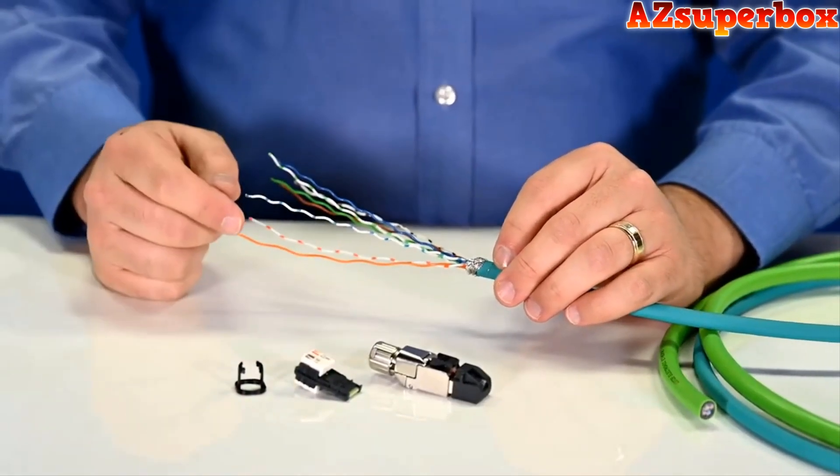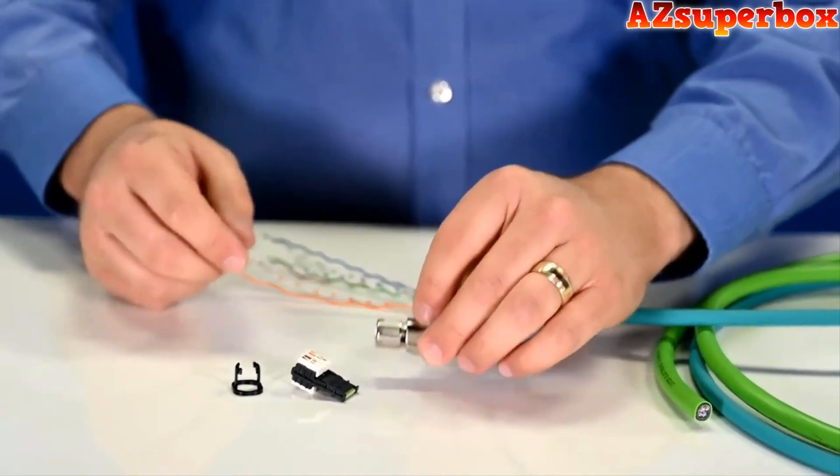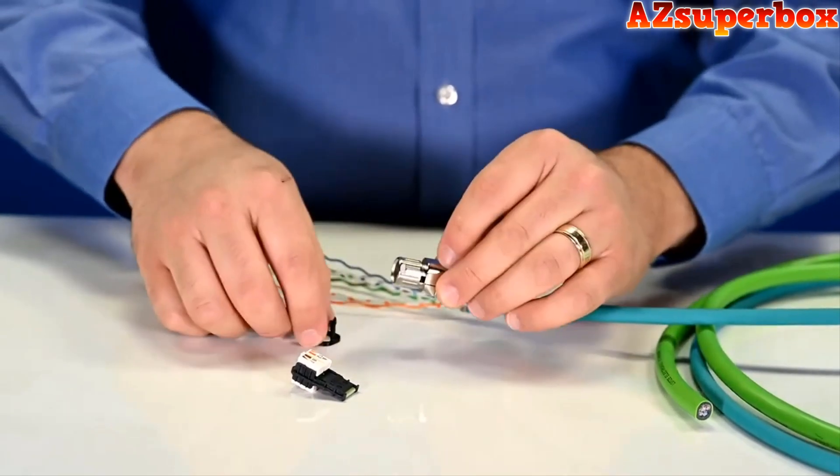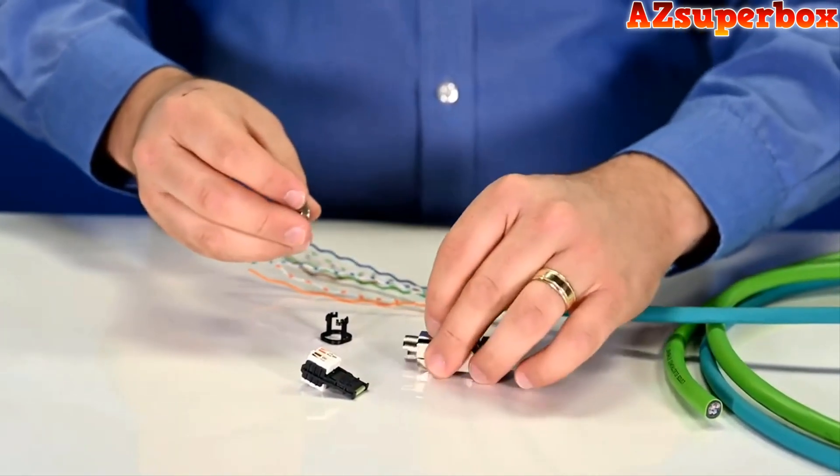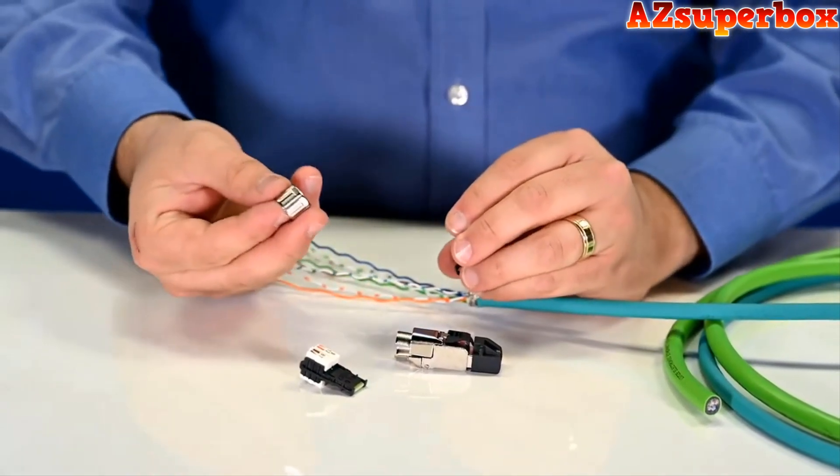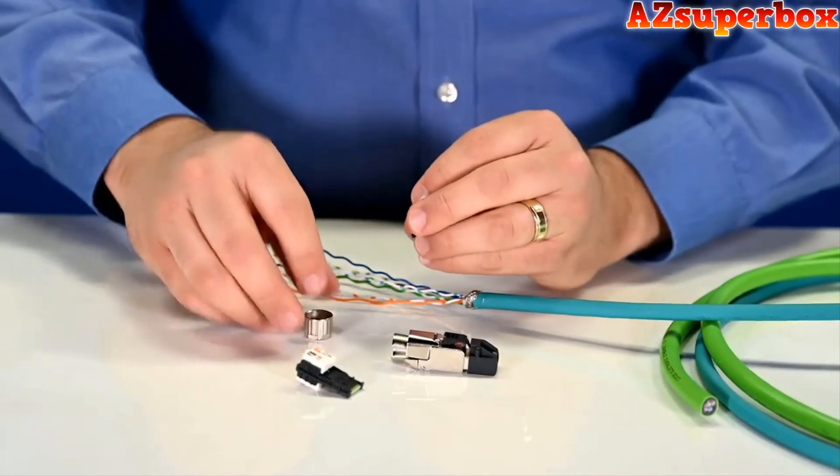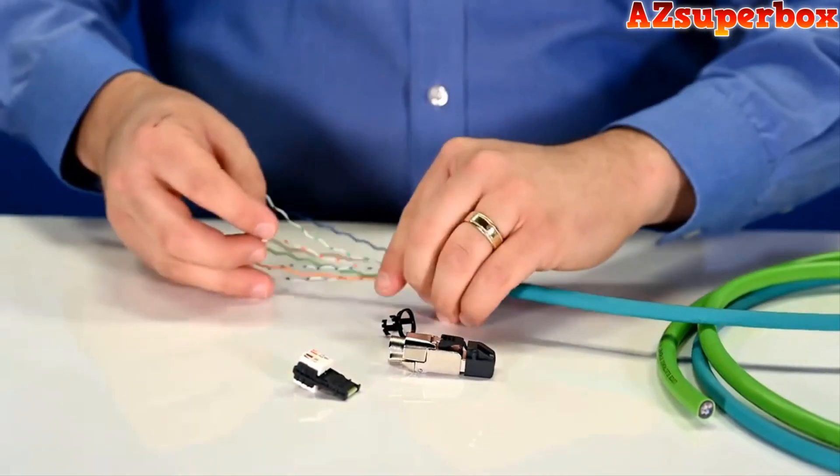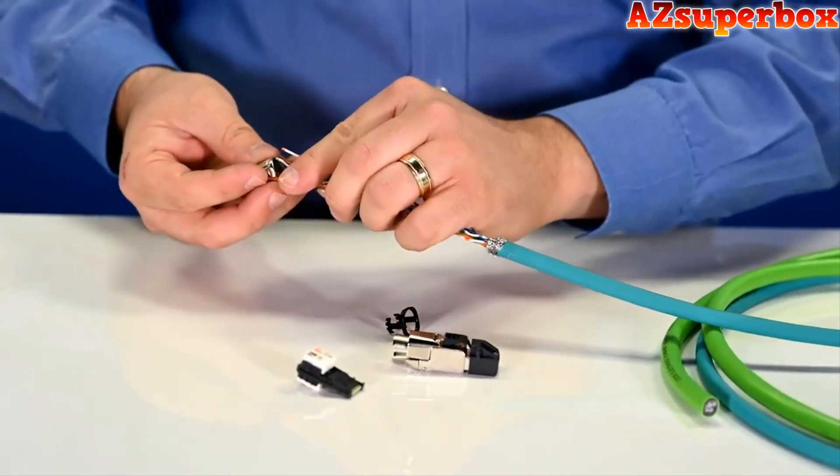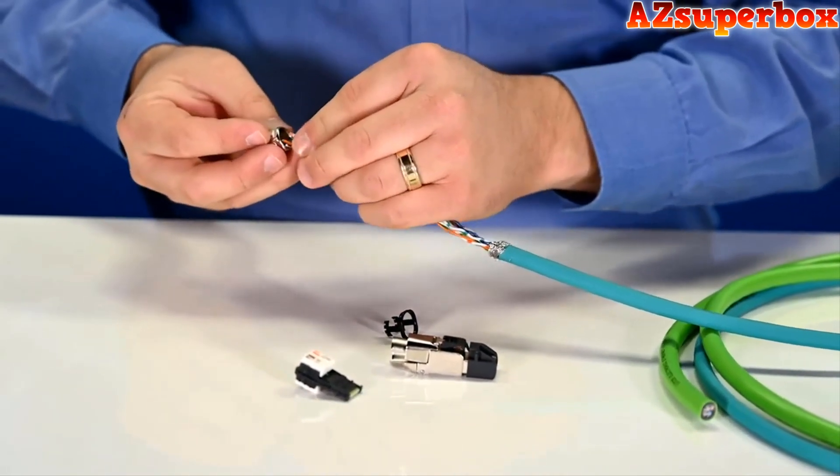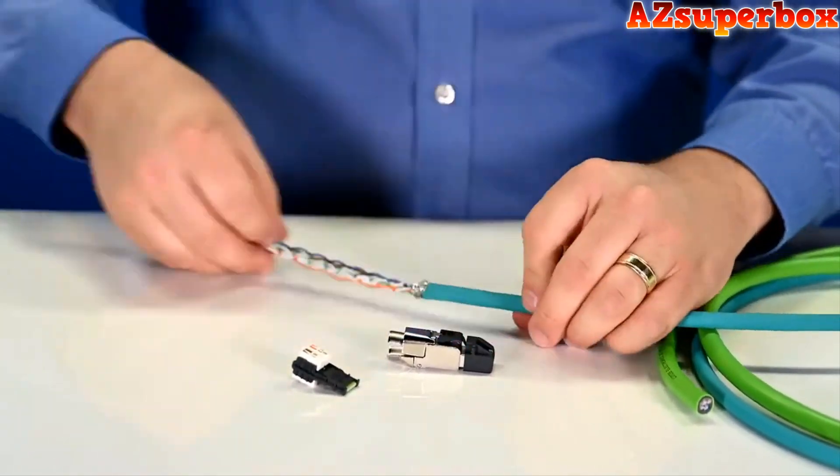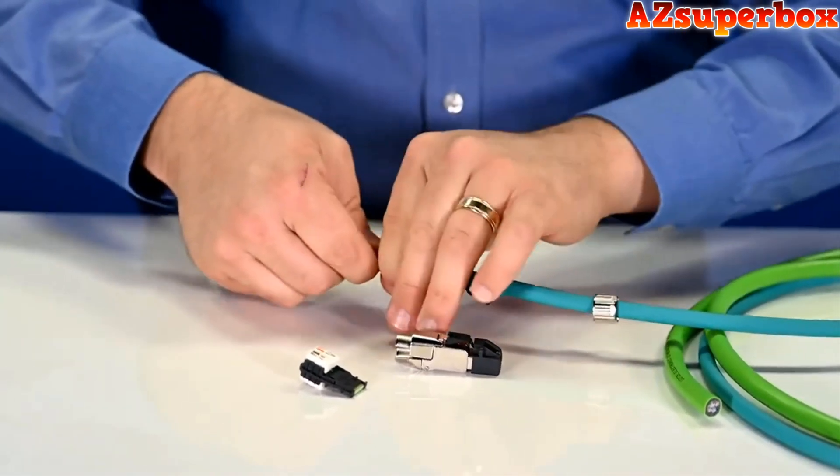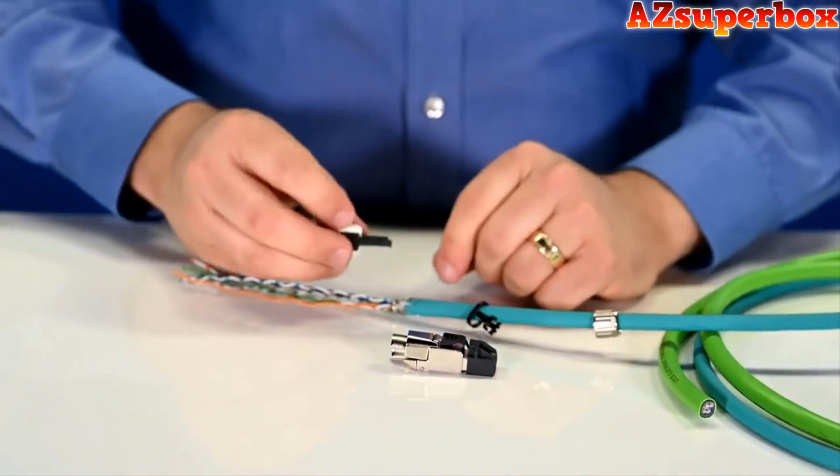Now that we have our cable prepared, we are ready to install our connector. The first step is to install our clamping ring. You can do this before or after you strip the jacket, but it's two pieces. We have this nut and we have this strain relief. We want to take these and just slide them all onto the cable.